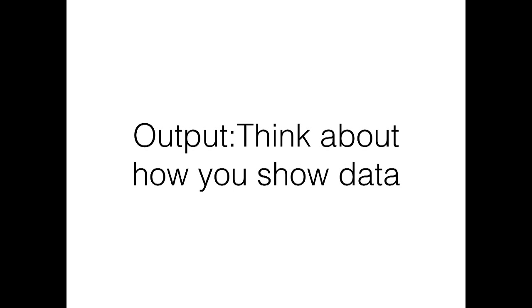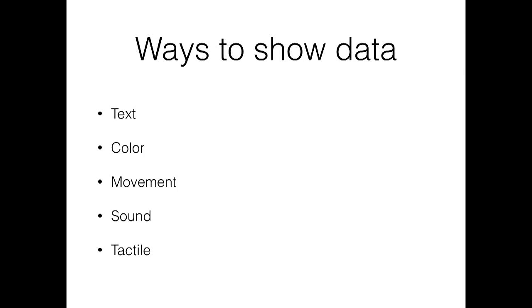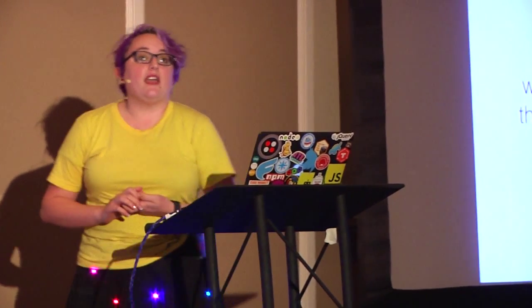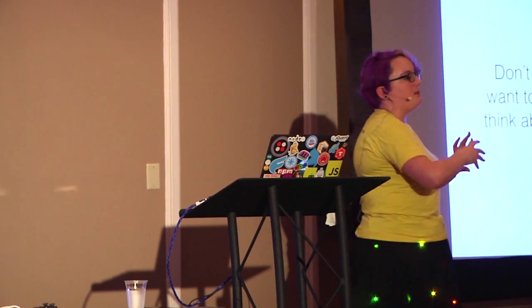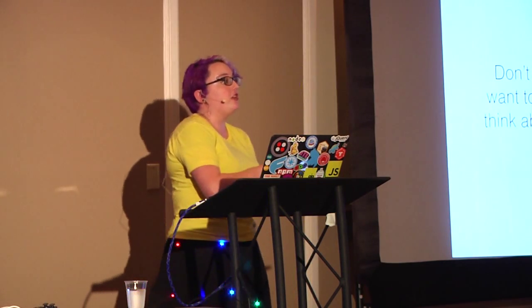When we think about output, a lot of people think of moving robotics, so motion is the output, and people think of text as an output. But there are lots of different ways to show data with robotics: text, color, movement, sound, and tactile are the ones that pop into mind. Think about how you want your robot to interact with you — not just how you interact with it. Is there a cool way to show something with color? Or with multiple LEDs? Or with sound or tactile? They have little vibration motors — you can actually feel your robot interacting with you.